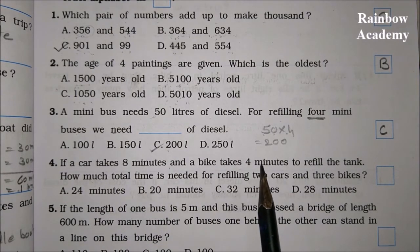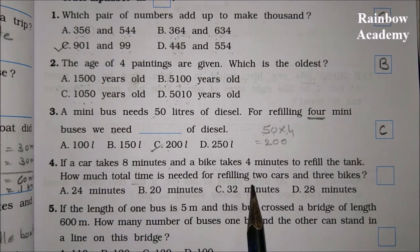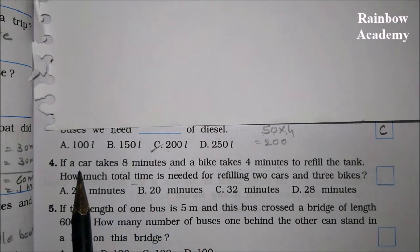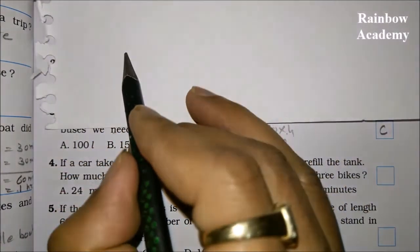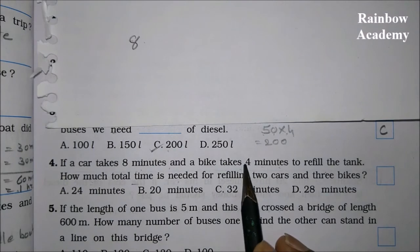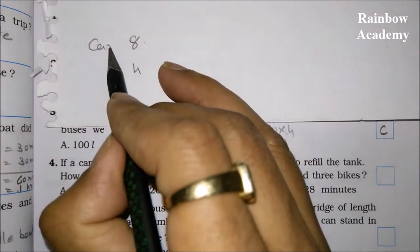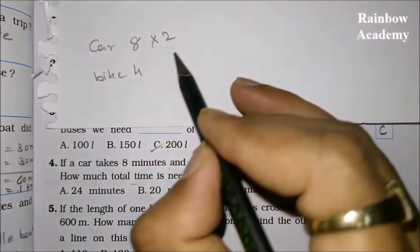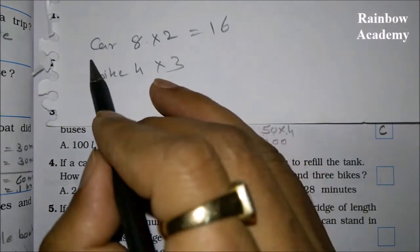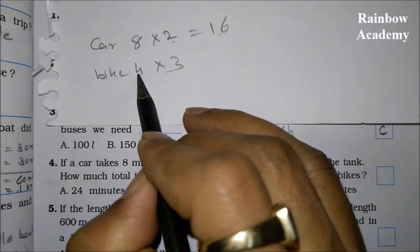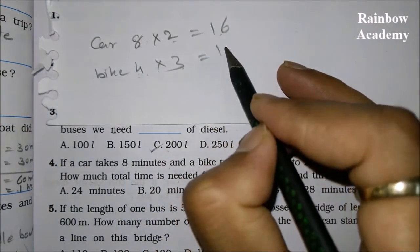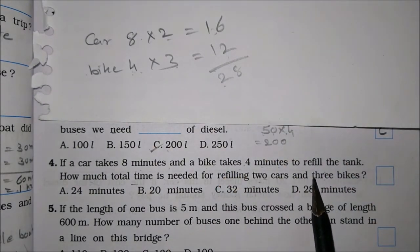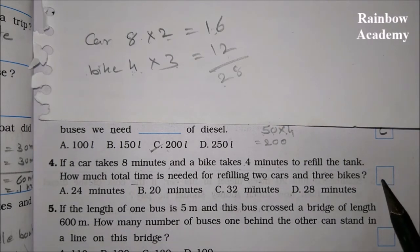Question 4: A car takes 8 minutes and a bike takes 4 minutes to refill the tank. How much total time is needed for refilling 2 cars and 3 bikes? For 2 cars: 8 × 2 = 16 minutes. For 3 bikes: 4 × 3 = 12 minutes. Total: 16 + 12 = 28 minutes. The answer is option D, 28 minutes.